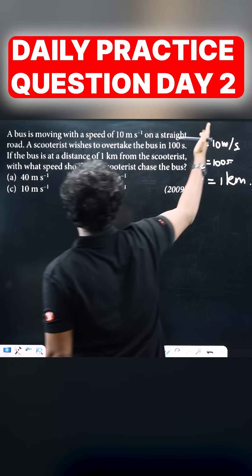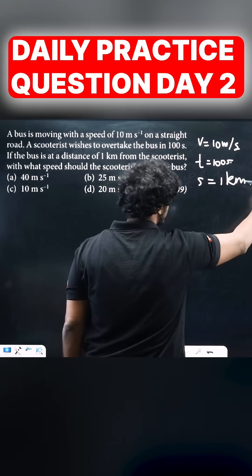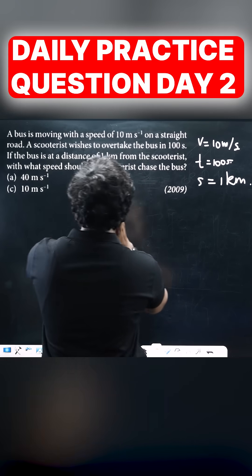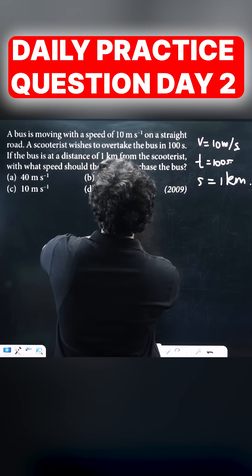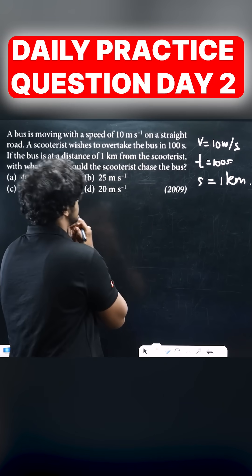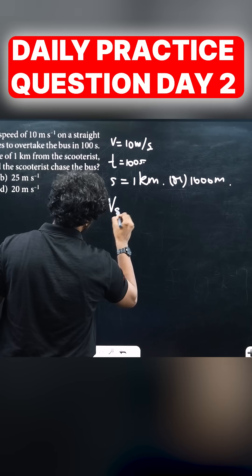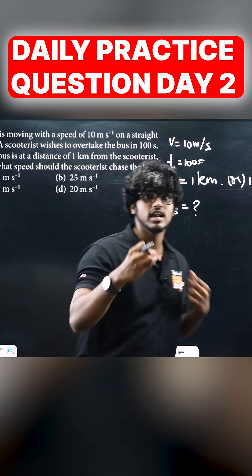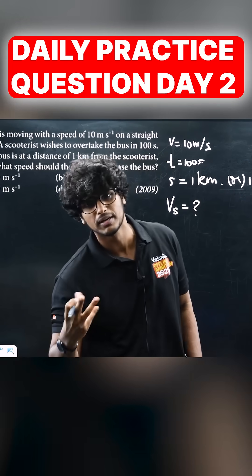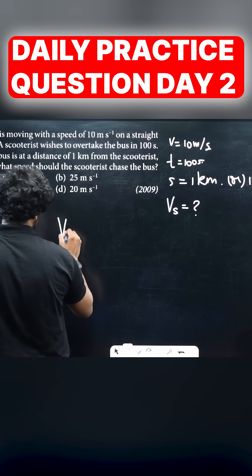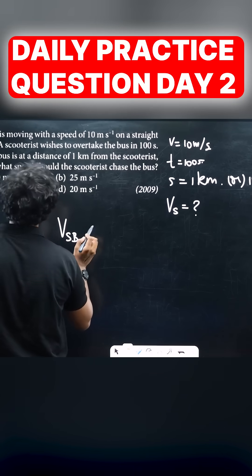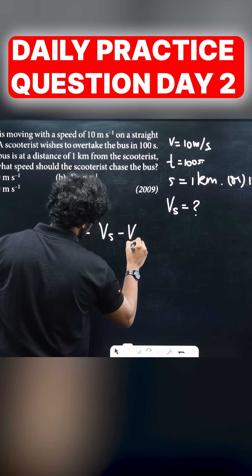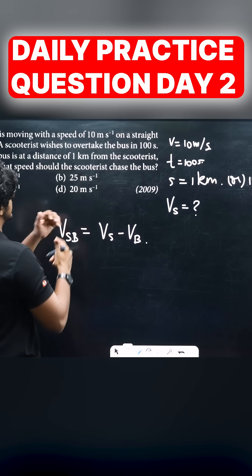Since the units are in meters per second and seconds, it gets easier. We need to find the speed the scooter should use to chase the bus — the velocity of the scooter. We use relative velocity: the velocity of the scooter with respect to the bus equals Vs minus Vb.